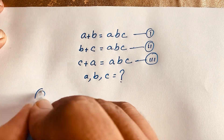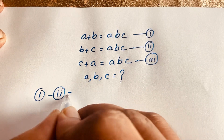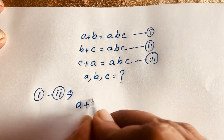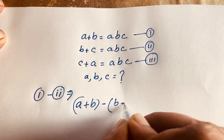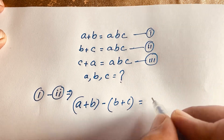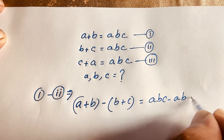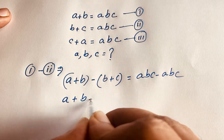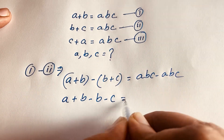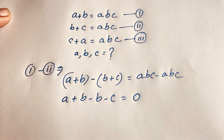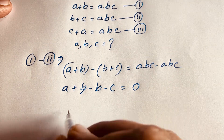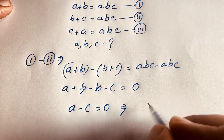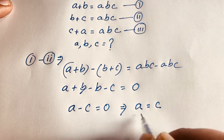So I subtract the first equation and the second equation. If I subtract, I get: (a plus b) minus (b plus c) is equal to abc minus abc. This gives a plus b minus b minus c is equal to 0, since abc minus abc equals 0. The b's cancel and we find a minus c is equal to 0.